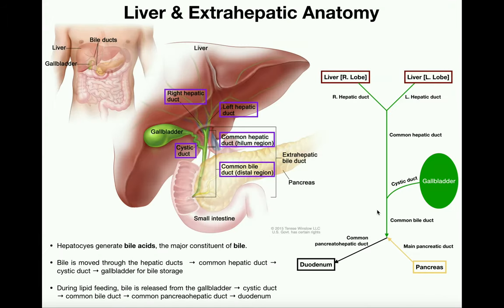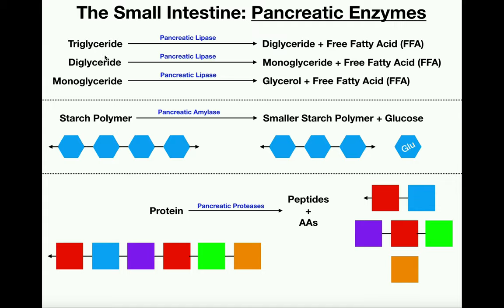In the previous video, I talked about how the gallbladder stores bile made in the liver, and upon the appropriate stimulus — triglycerides and fatty acids entering the small intestine — cholecystokinin, a hormone, is released from the small intestine. It activates the gallbladder, which squirts bile through the ductwork into the duodenum. The function of bile is to emulsify fats, pulling them apart so enzymes can degrade them — breaking down triglycerides, diglycerides, and monoglycerides into free fatty acids, which can then be absorbed.